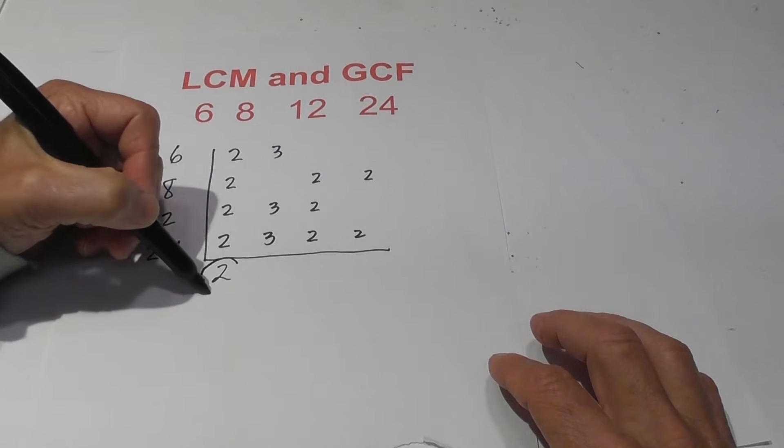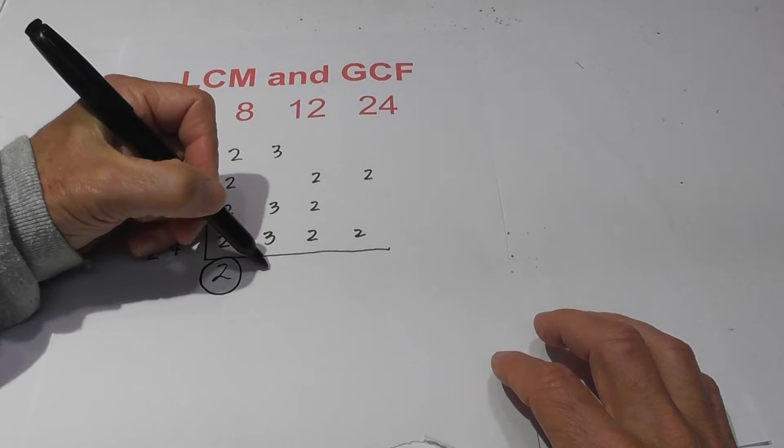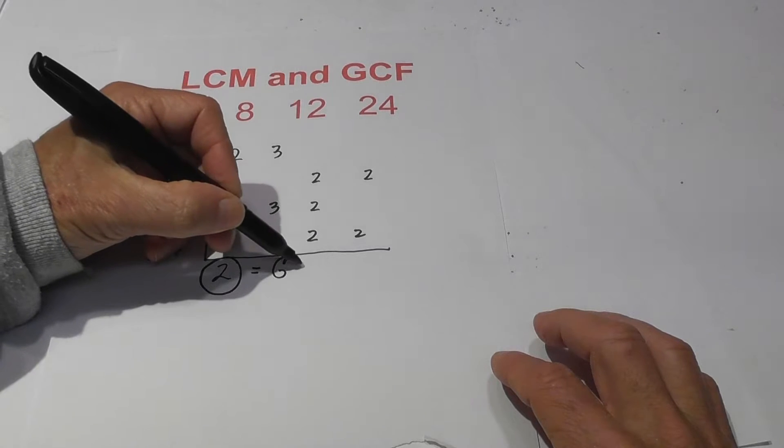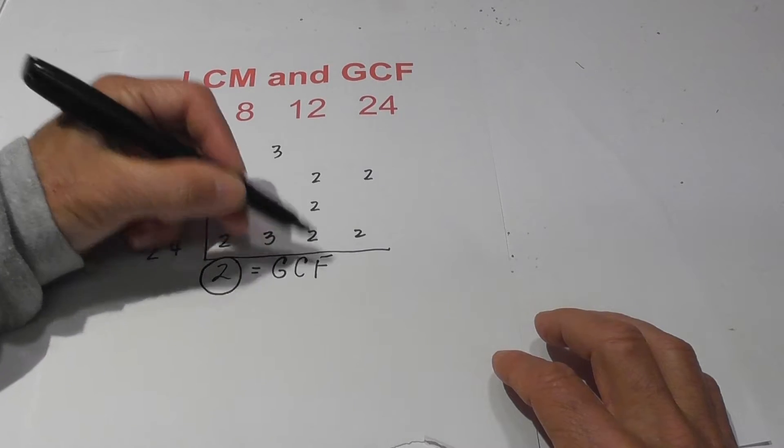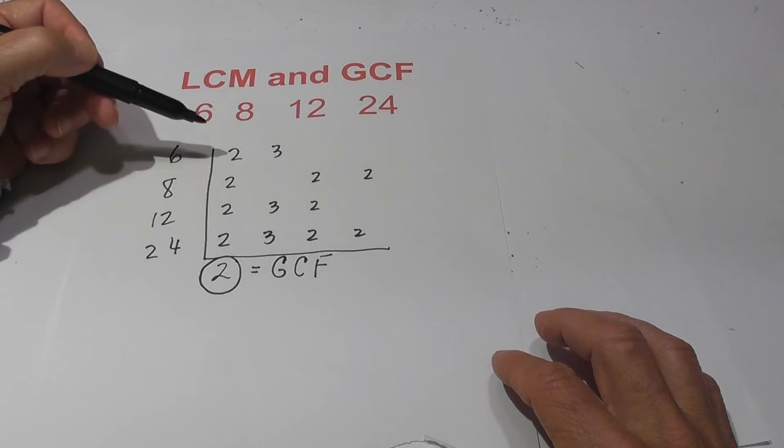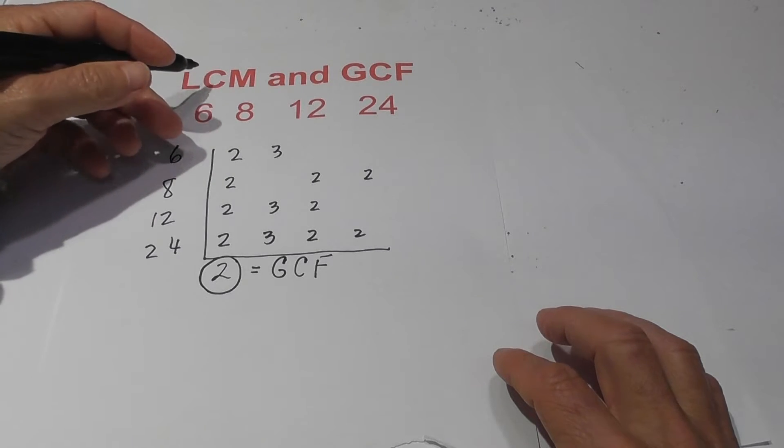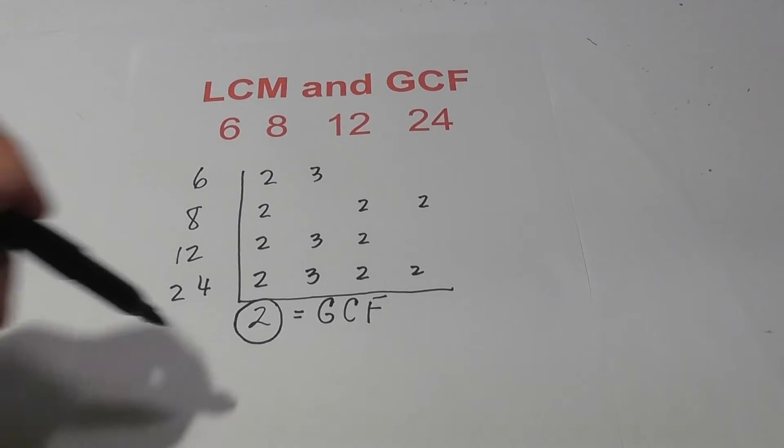So that tells me that the greatest common factor is two. Now if there are no numbers that are found in all four of these numbers, no prime numbers found in all four, then the GCF is one. Now the GCF is two, but now I need to add something.